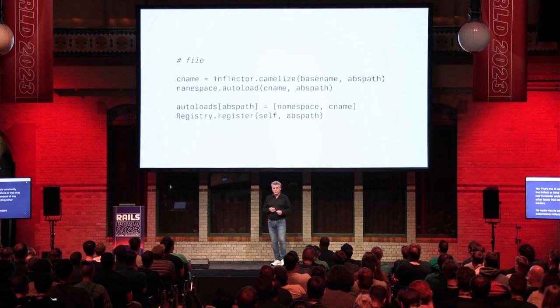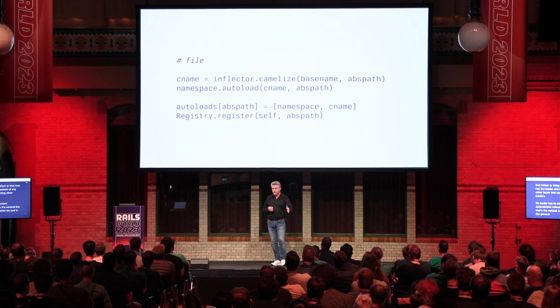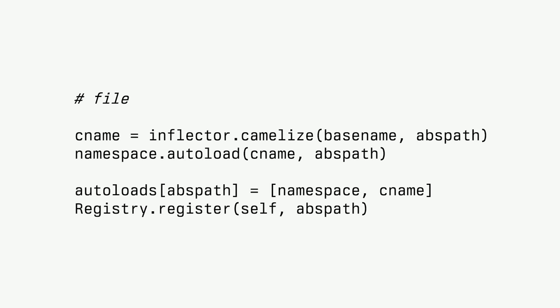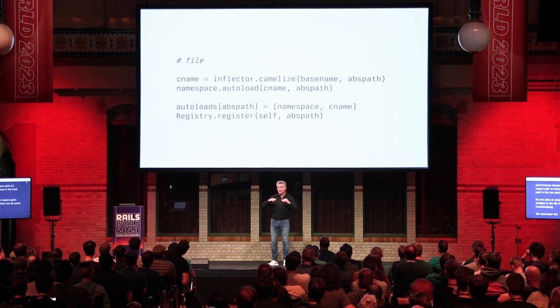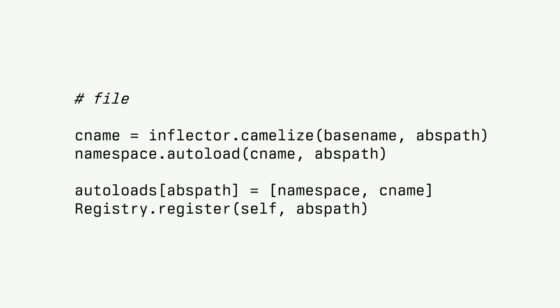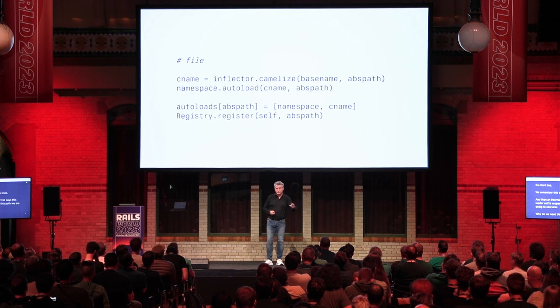Then comes the autoload call — what we saw in the Backgroundrb example, but Zeitwerk is doing it for us. We say: namespace (Object in this case), autoload :User with the absolute path to user.rb. Zeitwerk uses absolute paths because when you pass an absolute path to require, there's no lookup in the load path — require goes straight to the file. Then we do housekeeping: we remember the autoloads we've set, and register that this loader is responsible for this path.